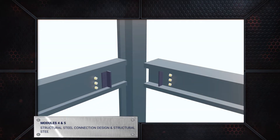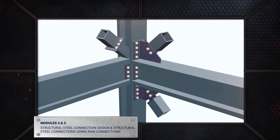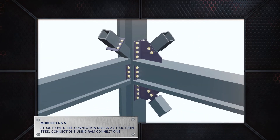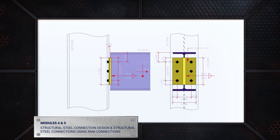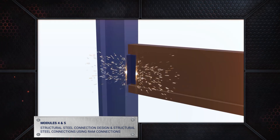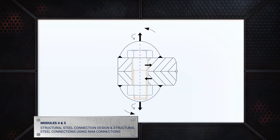In modules 4 and 5, you will learn connection design in steel structures. This includes a detailed understanding of connections, procedures for manual designs, bolted and welded connection theory, and understanding shear, moment, and axial forces.